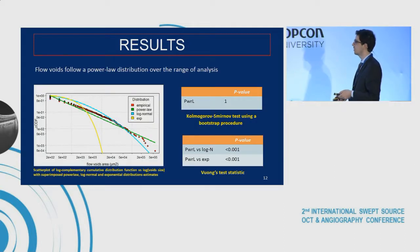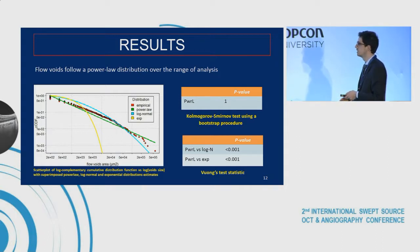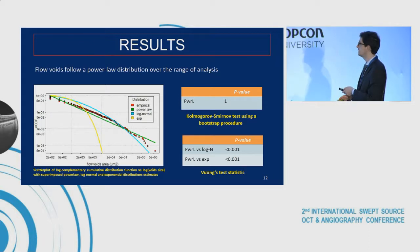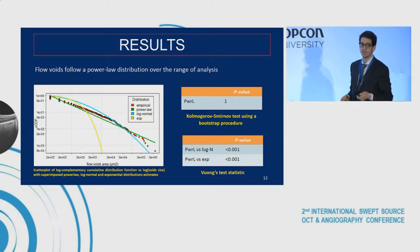Regarding our results, we observed that the distribution of the flow voids closely resembles a power law distribution, with advantage over the log-normal and exponential distributions. We could verify this when we performed the CAPS test using a bootstrap procedure, obtaining very strong values for all patients in our cohort.